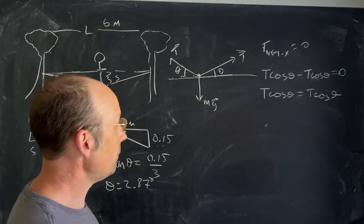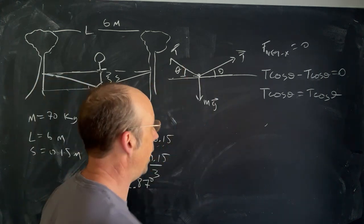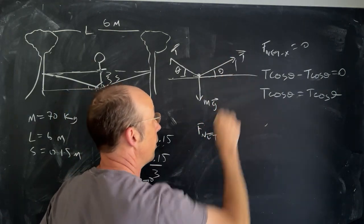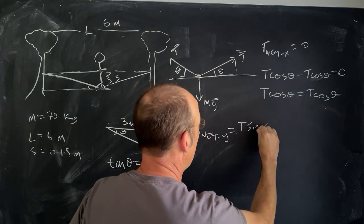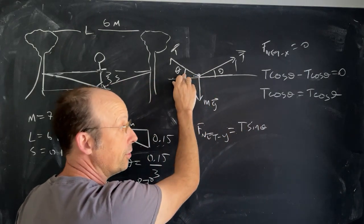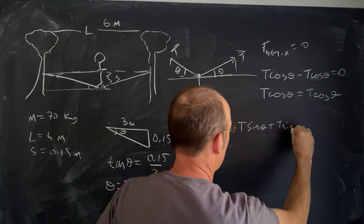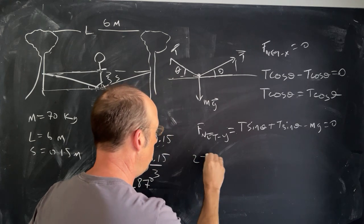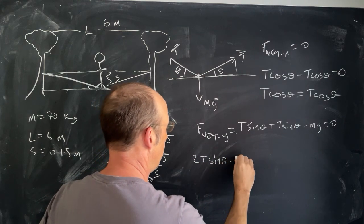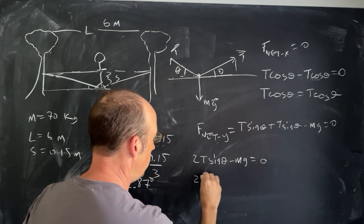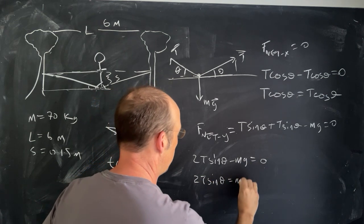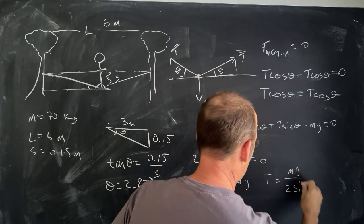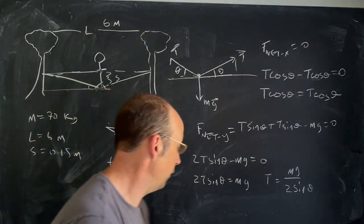So let's look at the y-direction equation. F_net_y = 0 as well. The y-component of each tension is T sine theta, and there are two of them, plus the gravitational force minus mg. So: 2T sine theta minus mg = 0, which gives 2T sine theta = mg, and therefore T = mg over (2 sine theta).